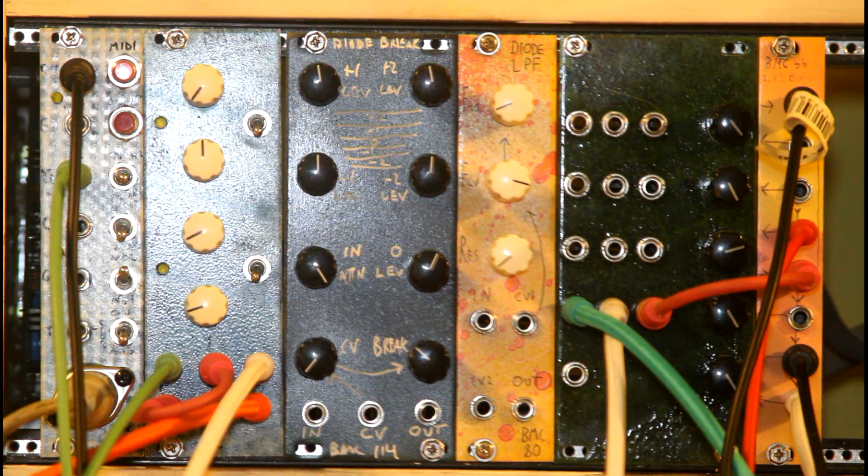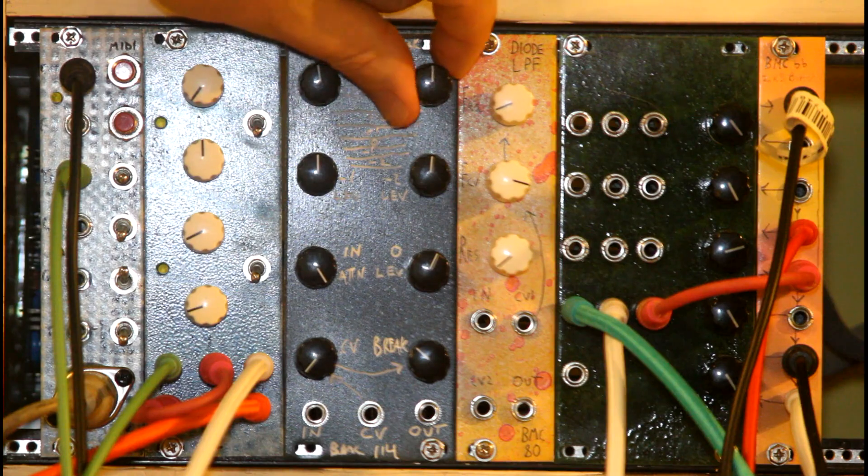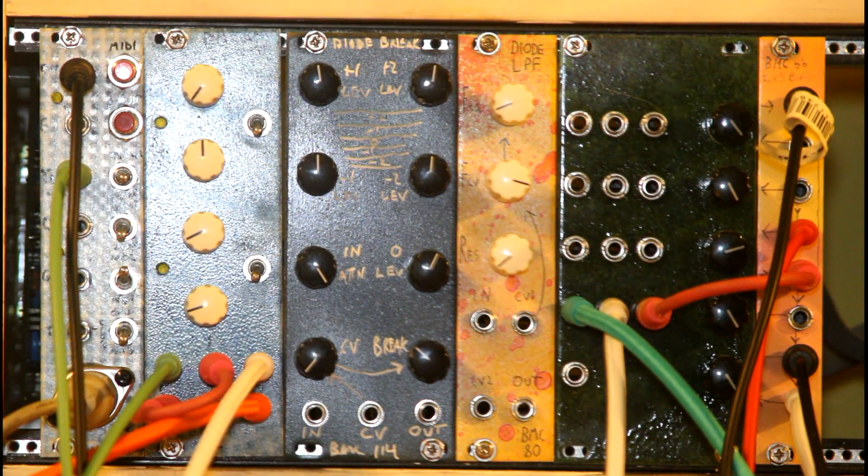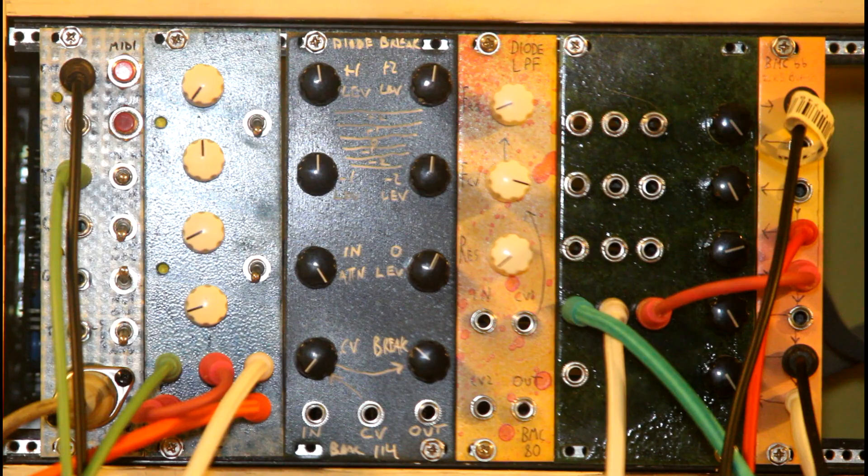And so what you then do after you've broken your signal down into these different bands is you add them back together using these level knobs. These can either invert or put the non-inverted signal together, so you can have these different little phase changes within a waveform that weren't there before.